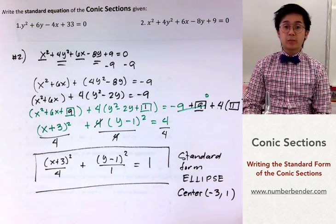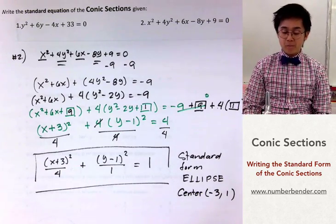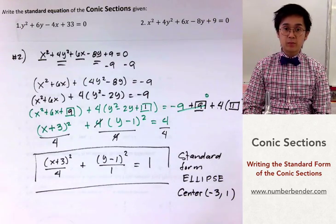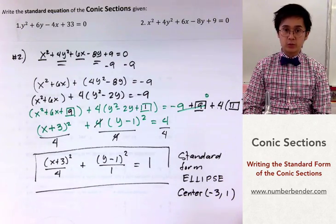So this is how we use the completing the square technique in converting the general form of the conic section to its standard form.